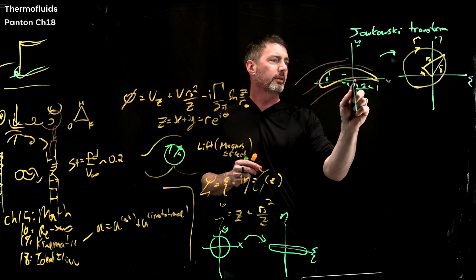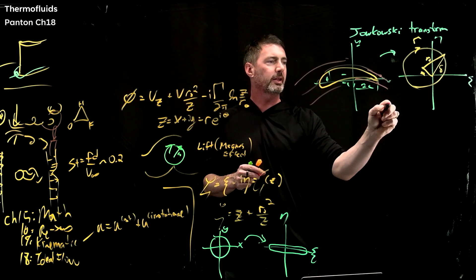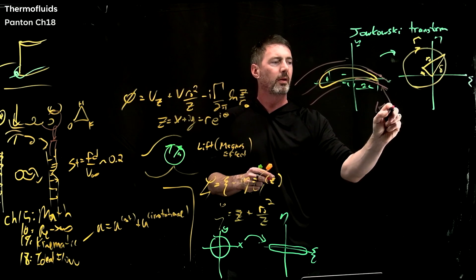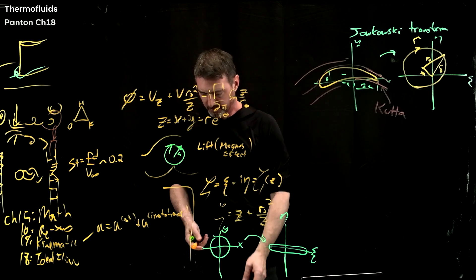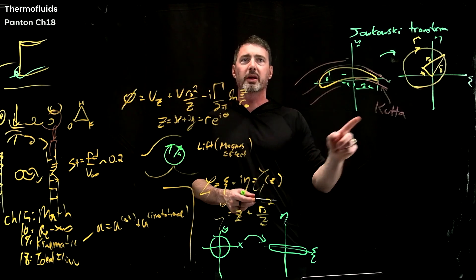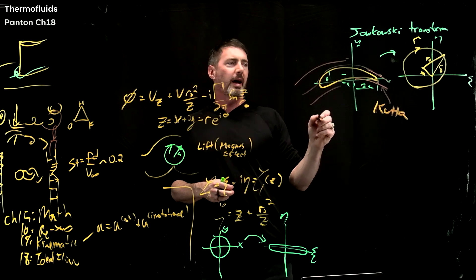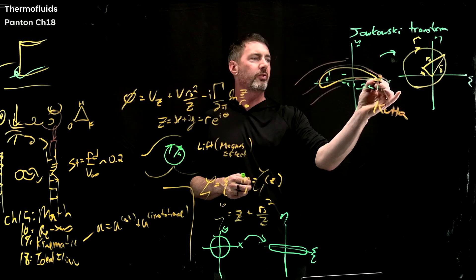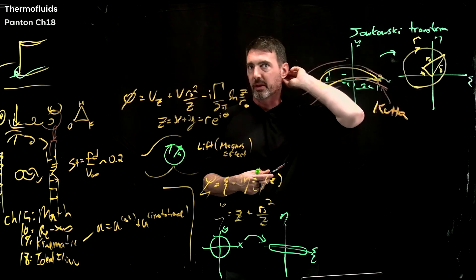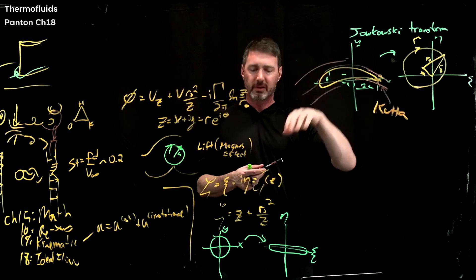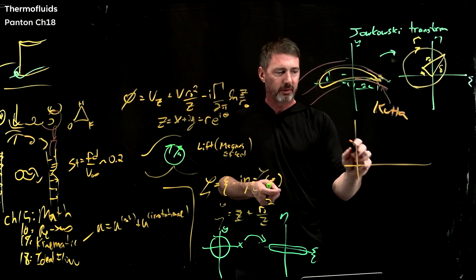And with the one criteria that you have to choose the gamma, such that this flow field, it's called the Kutta condition. The Kutta condition is where off the trailing edge, the flow is equal. Otherwise you get the wrong lift. So this lets you have an analytical solution. And so where this is powerful, and this was done in 1915.